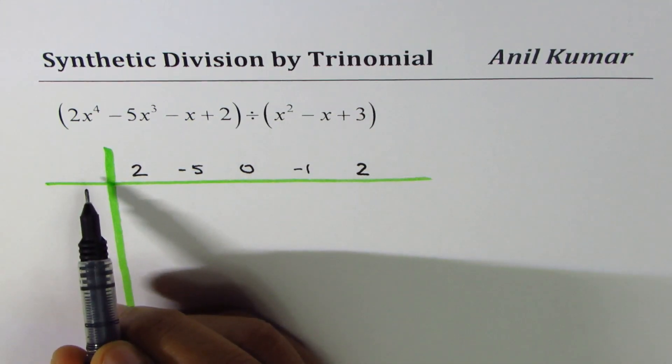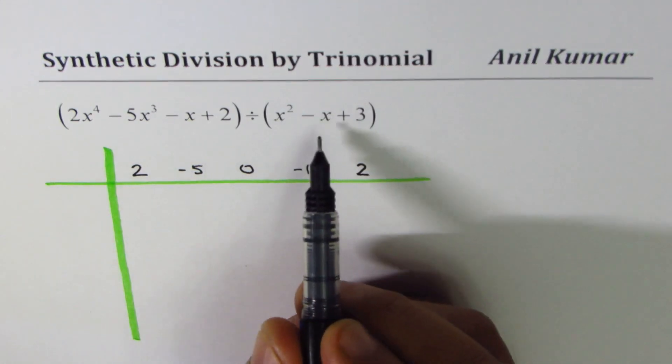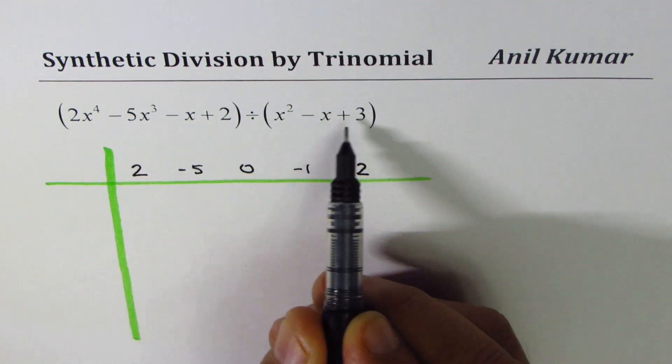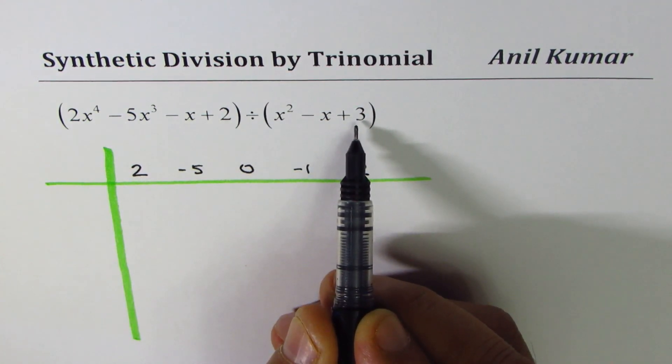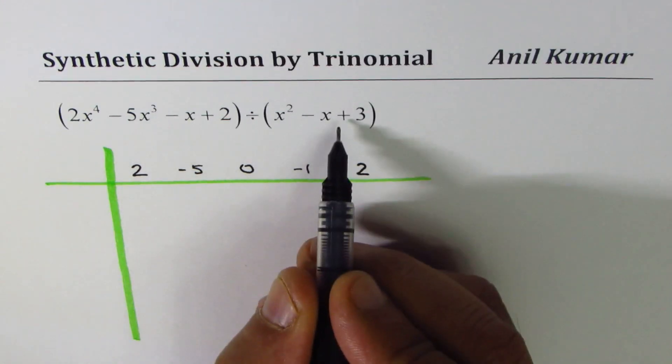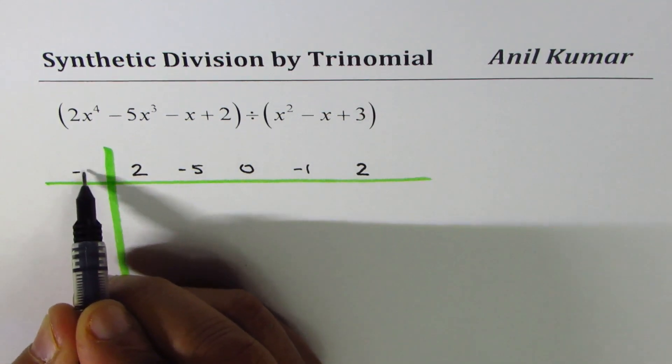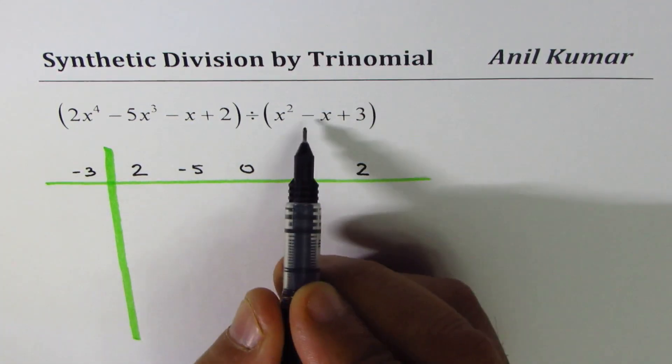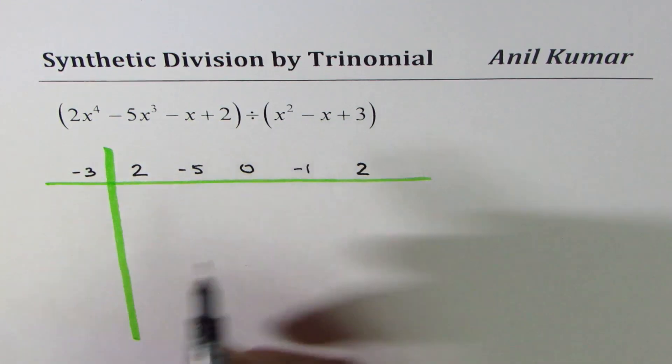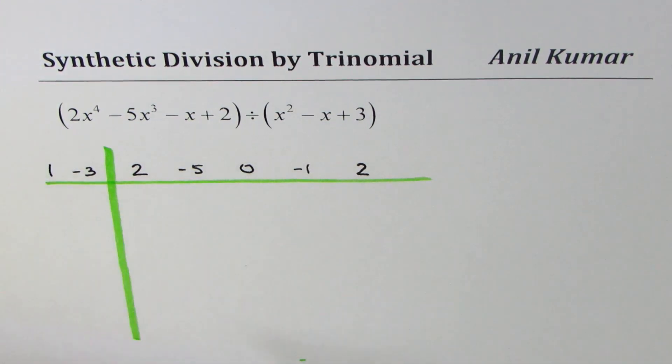Now, what should be the divisor? As you know, the divisor is the conjugate of the coefficients. In binomial, we took the conjugate of the constant. Now, we'll take the conjugate of the constant plus 3 replaced by minus 3. The coefficient of x is minus 1, we'll write that as plus 1. So that becomes the divisor.